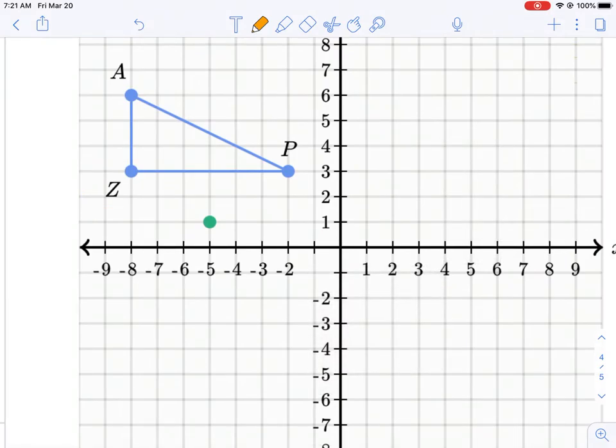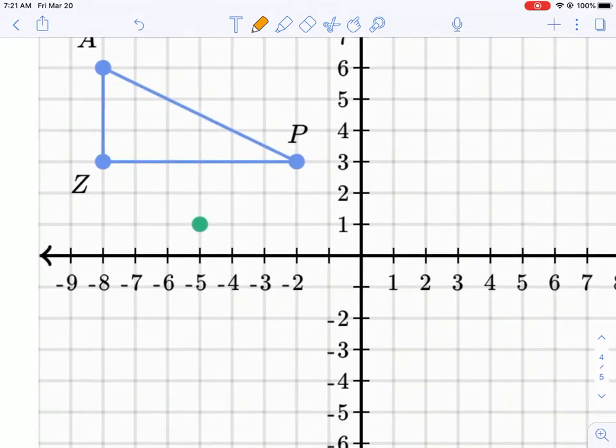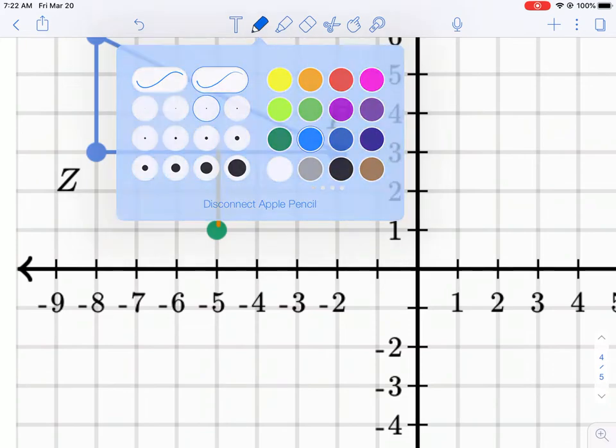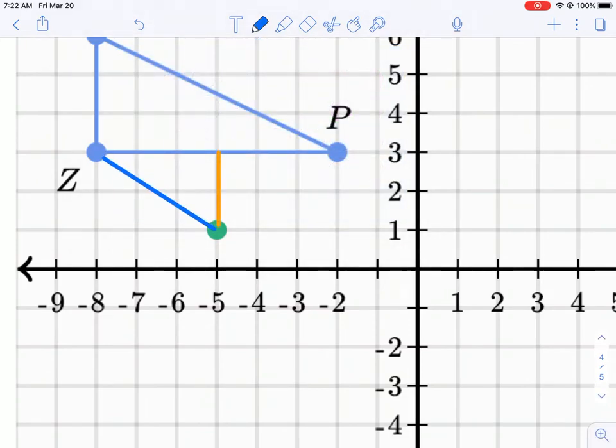So what I like to do is I start from my point of rotation, my center of rotation, and I like to draw what I call a support. So I draw this support up. I don't like to draw a diagonal support because for me, it's much harder to see on a coordinate plane what's 180 degrees. It's hard to kind of guesstimate that.